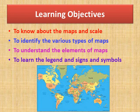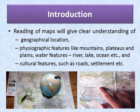Reading of maps will give a clear understanding of the geographical location — where the place is exactly located — the physiographic features, what are the features of that place, whether it is a mountain, a plateau, or a plain, and what are the water features in that area like river, lake, ocean, etc., as well as the cultural features like roads and settlements. By reading maps, you can get a clear understanding of three things: geographical location, physiographic features, and cultural features.